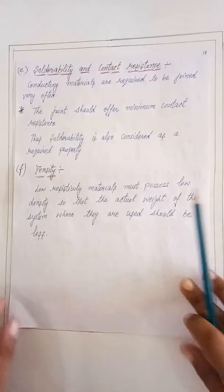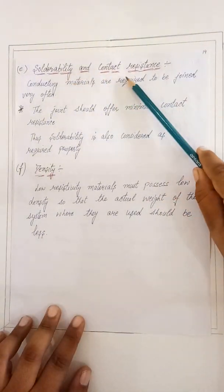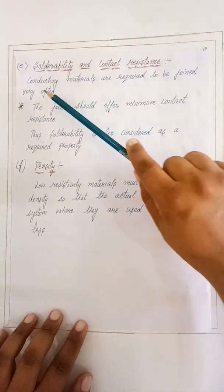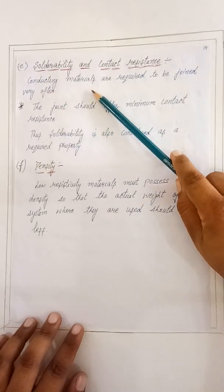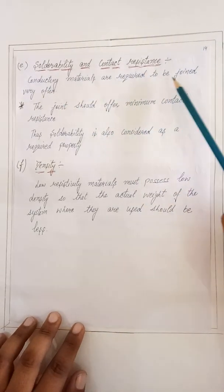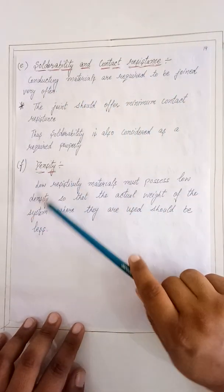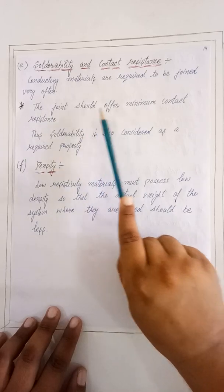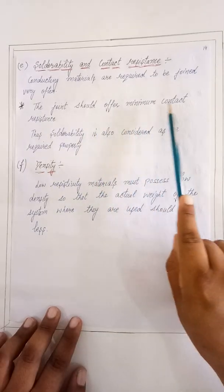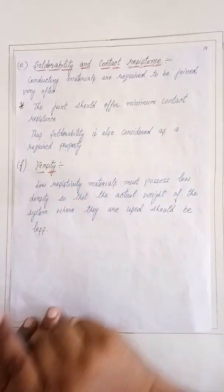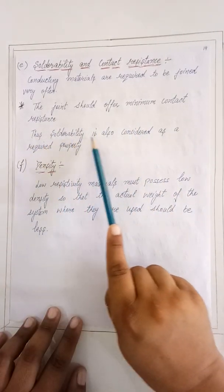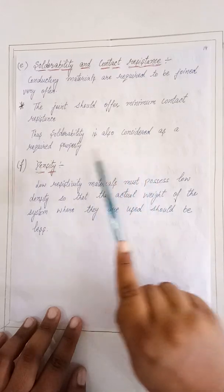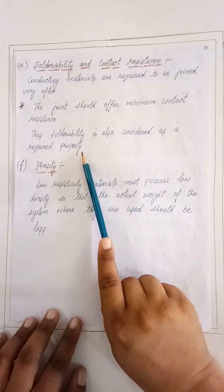The fifth property is solderability and contact resistance. Conducting materials are required to be joined very often, so the joint should offer minimum contact resistance. Therefore, solderability is also considered a required property.